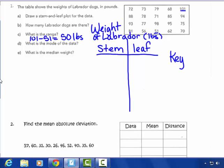So I need to have stems of 5, 6, 7, 8, 9, and 10. I'm going to make these a little smaller so I can fit them all on here.